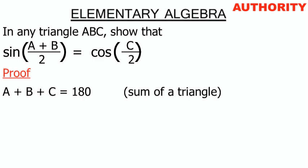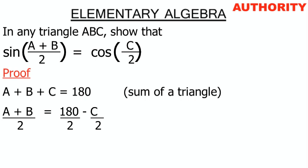In our question we are dealing with (A+B), so I'm going to take A+B on one side and the rest on the other side. From A + B + C = 180°, we take C to the other side, giving us A + B = 180° − C.